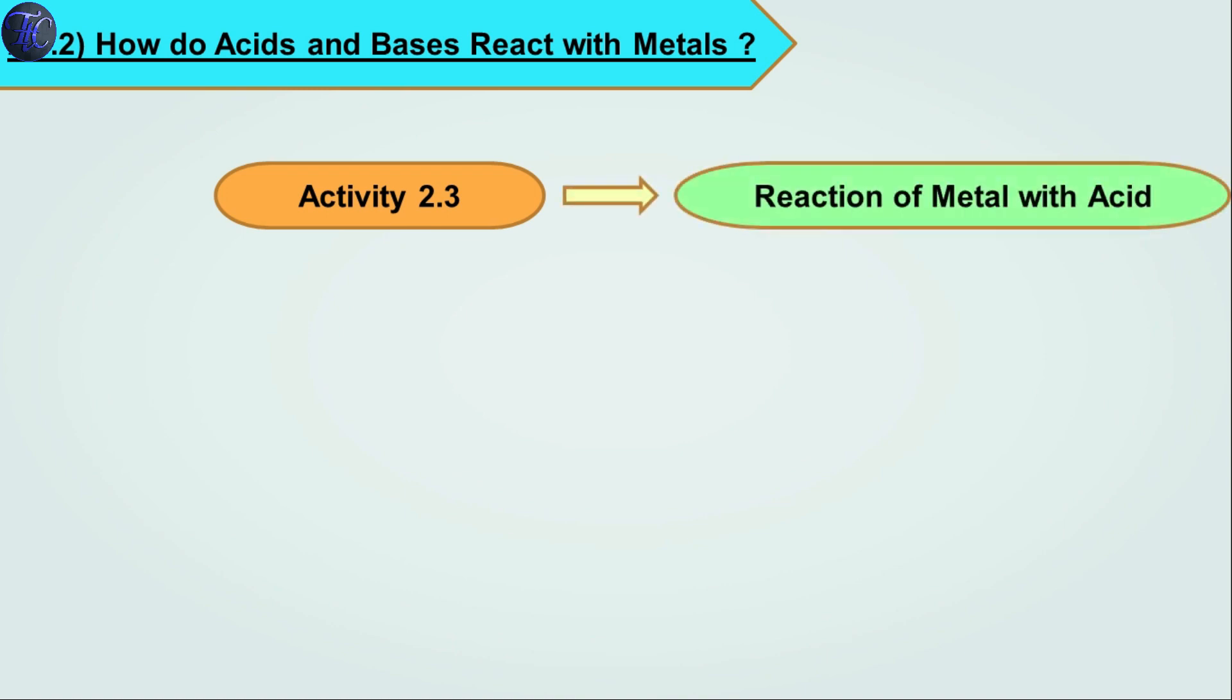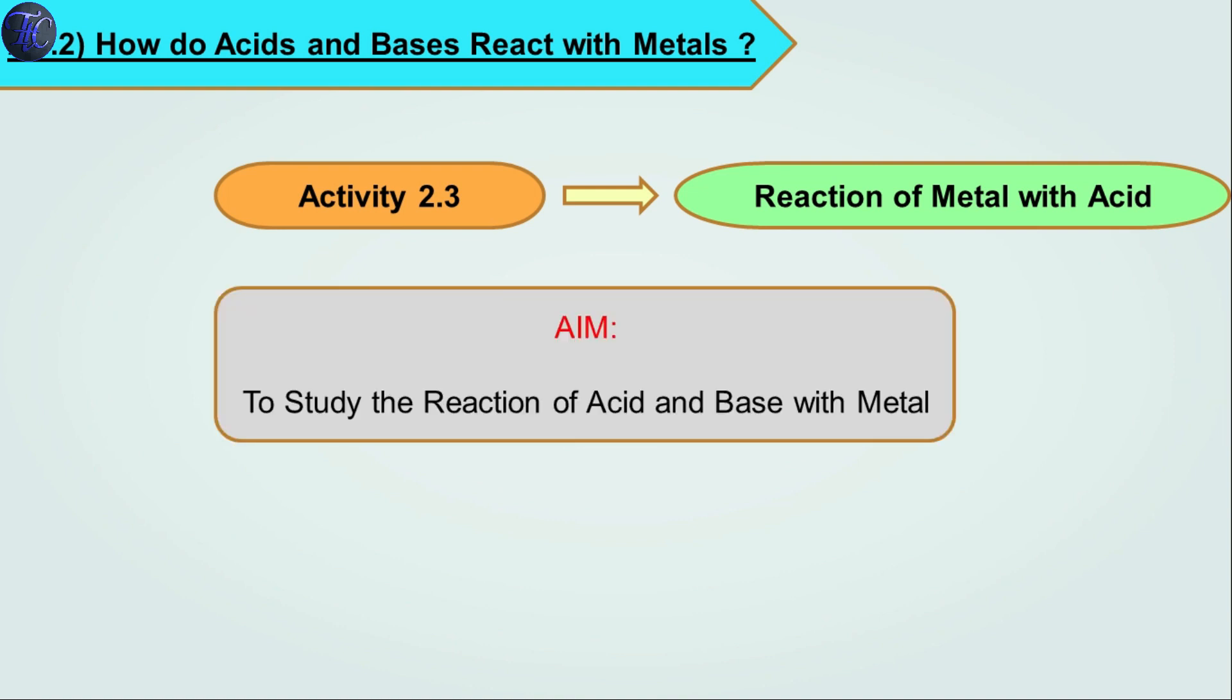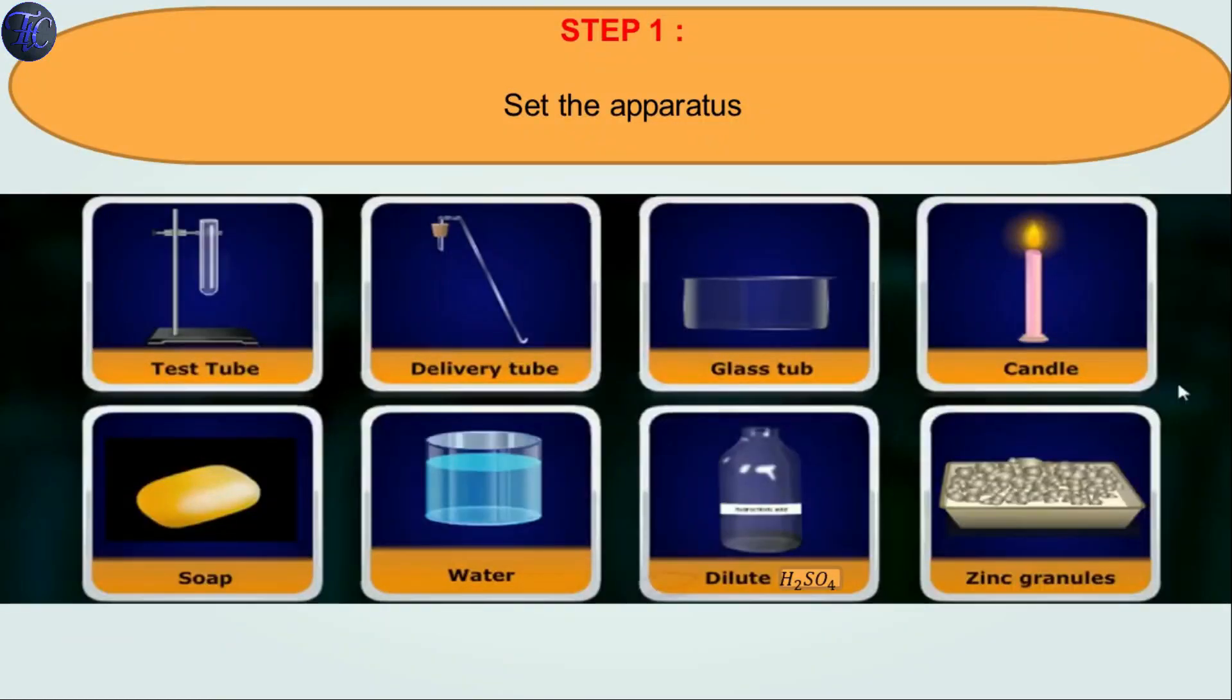In Activity 2.3, we will see the reaction of metal with acid. The aim of this activity is to study the reaction of acid and base with metal. This activity needs teacher assistance. Apparatus required are: test tube, delivery tube, glass tube, candle, soap, water, dilute H2SO4, and zinc granules.